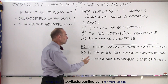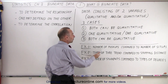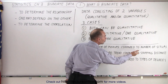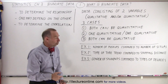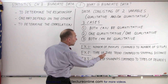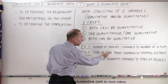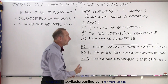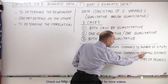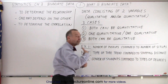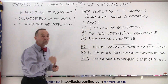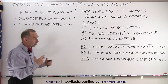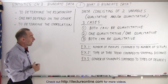Or we could be comparing the type of tire tread to the amount of stopping distance. So the kind of tire tread would be qualitative, and the stopping distance — how far the car goes when you try to stop — would be quantitative. And there might be a relationship between them.